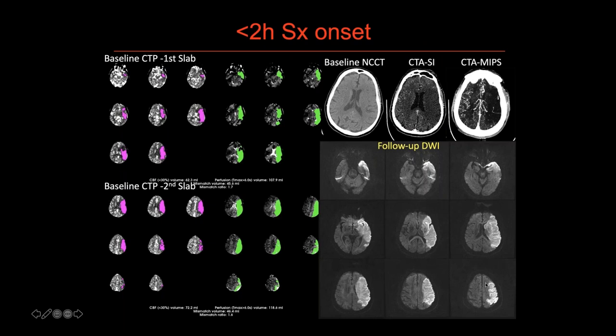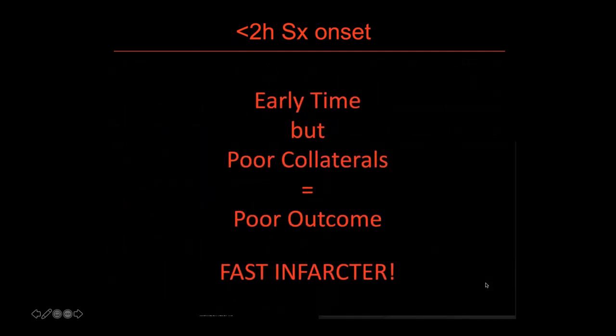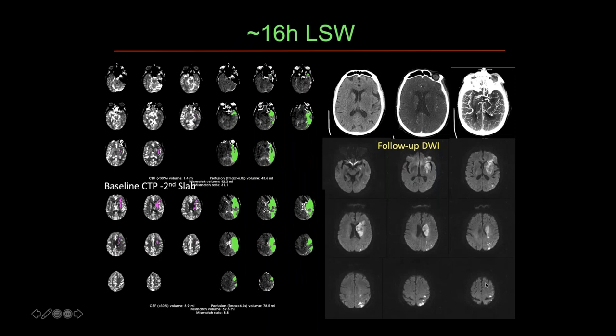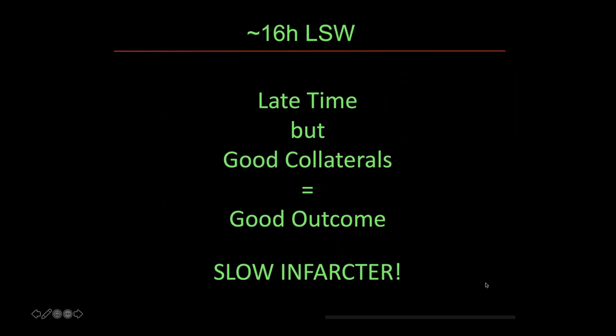Here's a patient two hours from symptom onset where the core infarct and penumbra are essentially matched — poor collaterals, likely poor outcome, a fast infarctor. Versus a patient 16 hours from symptom onset with a small core infarct relative to the penumbral area — great collaterals, a slow infarctor who would still have a good outcome with mechanical thrombectomy, even though the 2015 AHA guidelines would have said don't treat them past six hours.